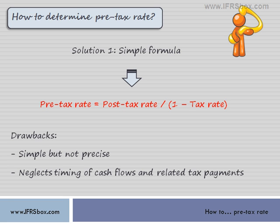Sometimes companies pay taxes on their income one or more years after that income occurred. Moreover, the discount rate should also reflect asset specifics such as its useful life. However, if and only if you are sure that these aspects would not have a material impact on the pre-tax rate, you might use this method — but remember its limitations. To illustrate it, let's take a look at our example.